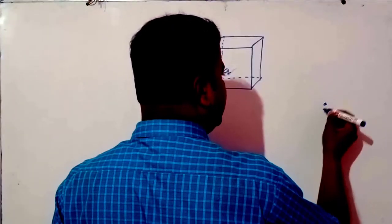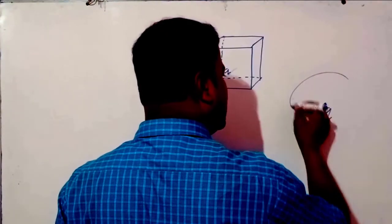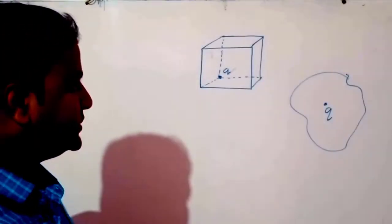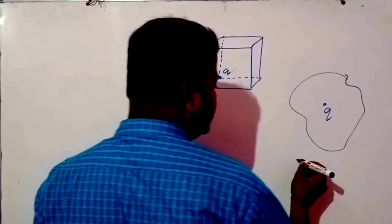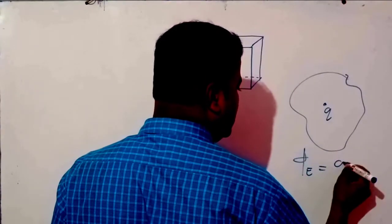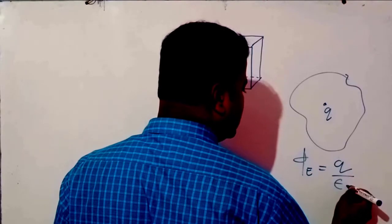We know if a charge q is enclosed, then we can apply Gauss's theorem. This electric flux phi equals q upon epsilon naught. Here, q is the charge enclosed by the surface and epsilon naught is the permittivity of free space.